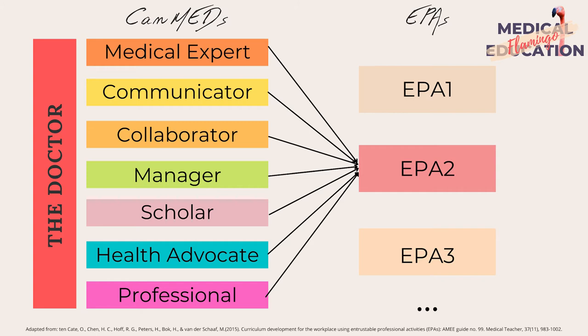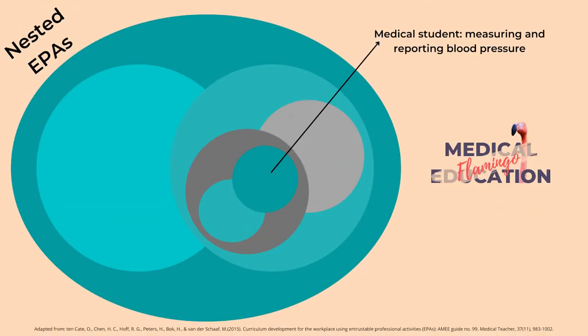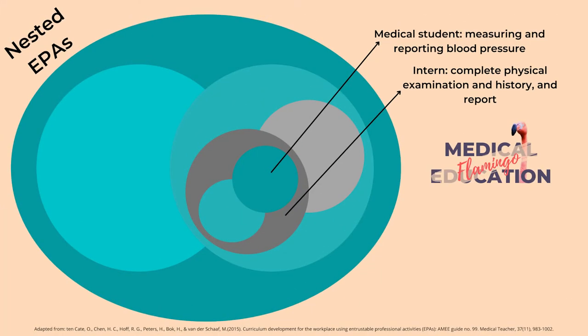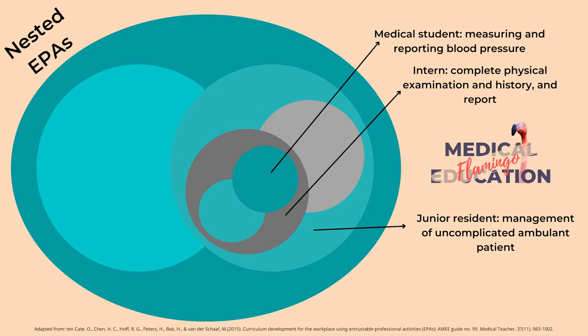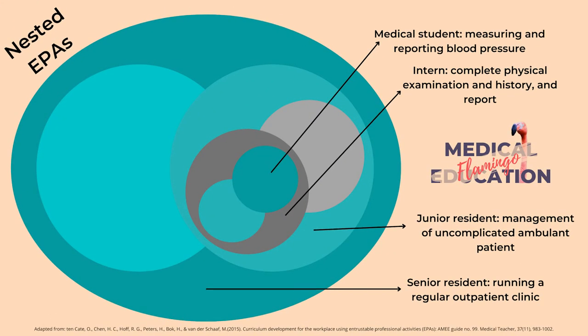While analytic frameworks describe the abilities of a competent medical student in detail, EPAs describe what the competent student is able to do. EPAs are units of professional practice. For instance, measuring and reporting blood pressure could be an EPA for medical students; complete physical examination and history could be an EPA for interns; management of an uncomplicated ambulant patient could be for a junior resident; and running a regular outpatient clinic could be for a senior resident.